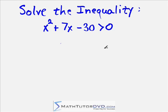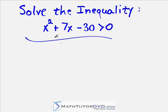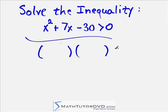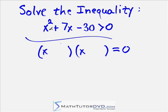If you were going to solve this as an actual equation, how would you do it? Well, you would factor this side and set it equal to zero. So let's go ahead and do that. If you were going to factor this, you would have your two parentheses set equal to zero. Because we have x squared, we'll have x and x here — x times x gives us x squared.